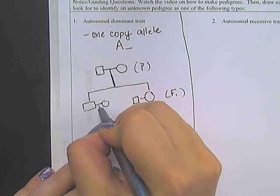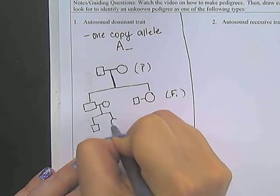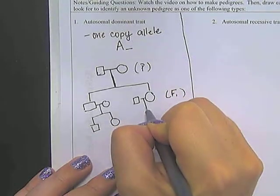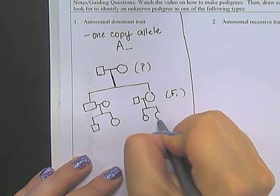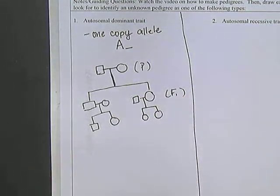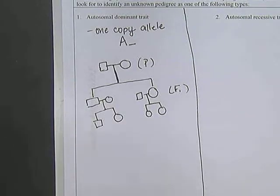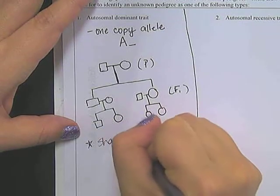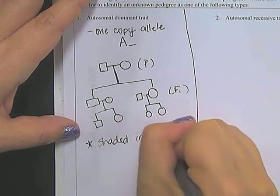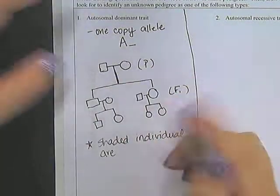So these folks are going to get married. Let's say they have two children each. We're just going to keep it pretty simple for the sake of these pedigrees. Now, in order to recognize something as a dominant trait, what I'm going to do now is I'm going to shade in the individuals that are affected. So in this case, in this example, our shaded individuals are affected by whatever trait that we are tracking.